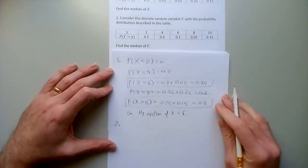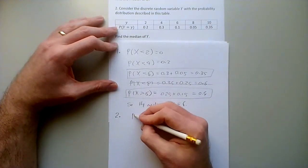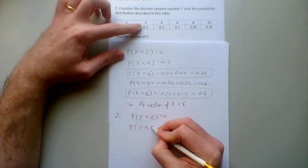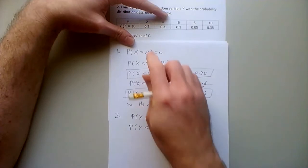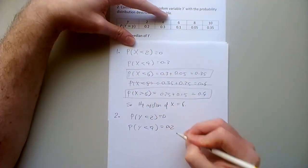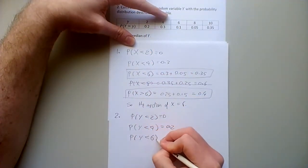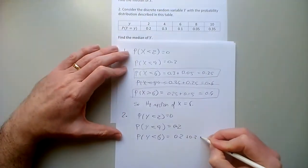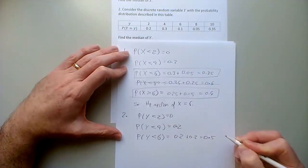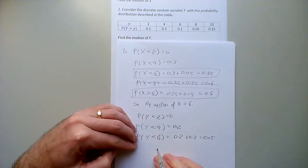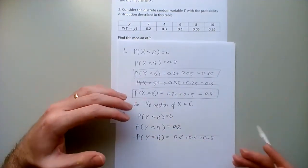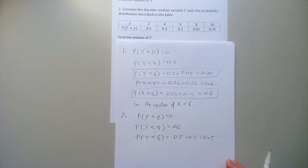For problem two, using the same running total approach: the probability that Y is less than 2 is 0. The probability that Y is less than 4 — there's only one number less than 4 and its probability is 0.2. The probability that Y is less than 6 — there are two numbers less than 6 and their probabilities together are 0.2 plus 0.3, which is 0.5 exactly. Every number after this will have more than 0.5 as its cumulative probability, so none of them can be the median. And 6 can't be the median either because the probability of being less than 6 is exactly 0.5.